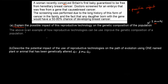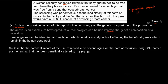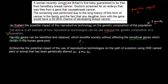What I wrote is: the above is an example of how reproductive technologies can be used to improve the genetic composition of a population. Harmful genes can be identified and replaced, which benefits society without affecting the beneficial genes, which remain in the human gene pool. This is beneficial because we can remove the harmful genes whilst keeping the good genes, thereby improving our genetic composition for the population. That will get you two marks.